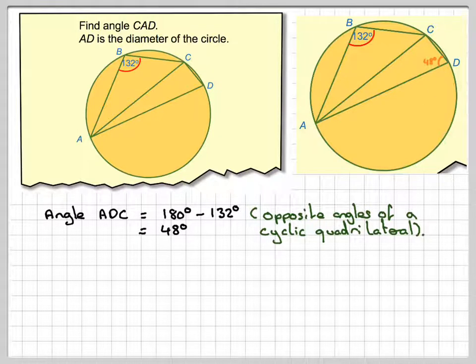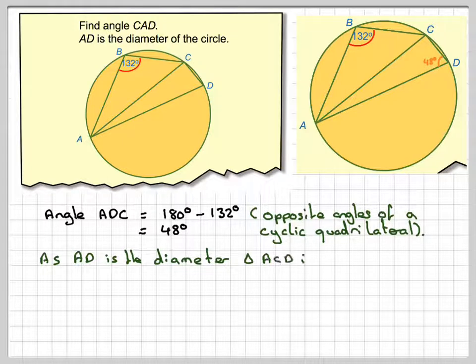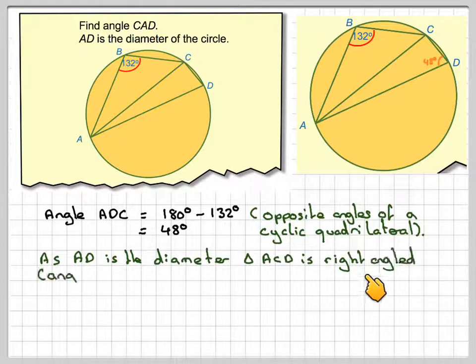So mark that on. Right, then we have to realize that AD is the diameter, which makes triangle ACD right angled.